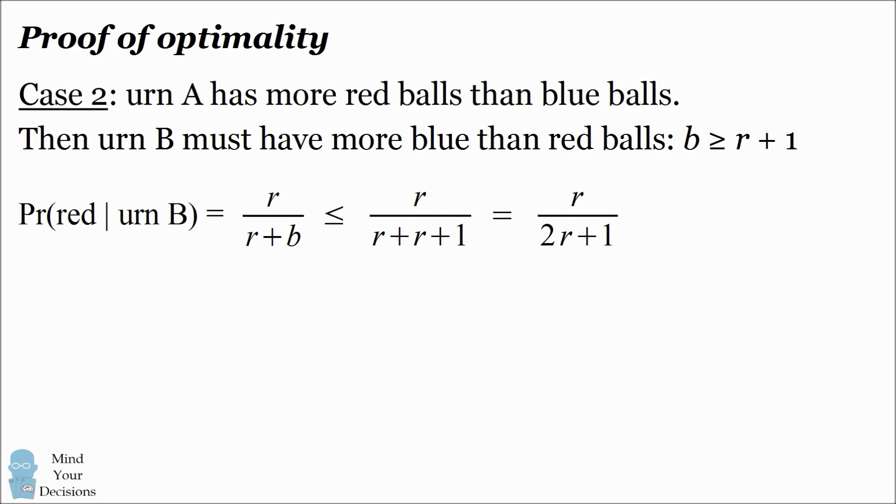If we take the derivative of this function, it is always going to be positive in its domain. This means r divided by 2r plus 1 is increasing in the variable r. In other words, the more red balls we place in urn B, the higher the chances that we'll select a red ball.